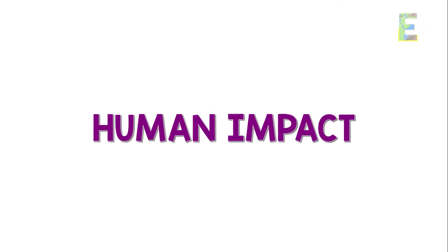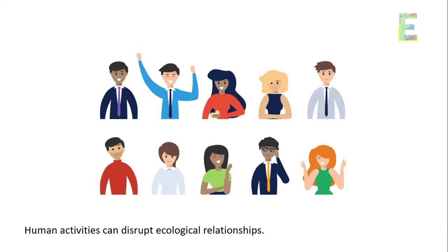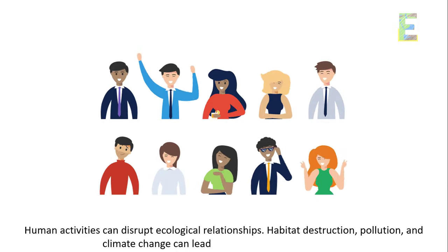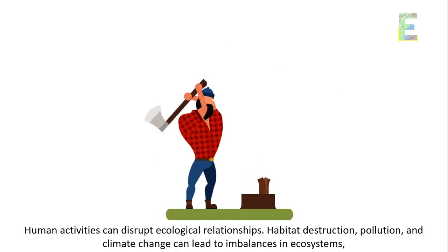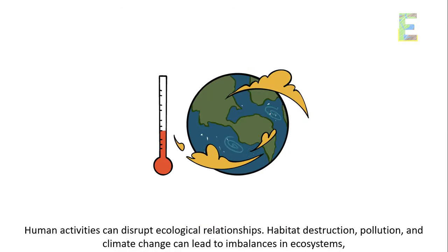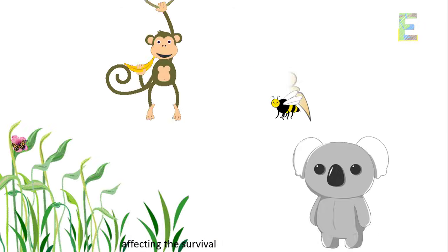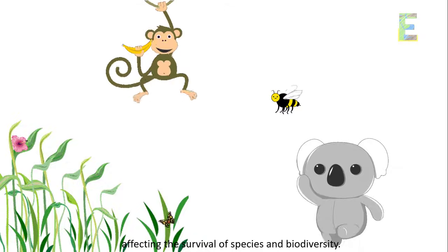Human impact: human activities can disrupt ecological relationships. Habitat destruction, pollution, and climate change can lead to imbalances in ecosystems, affecting the survival of species and biodiversity.